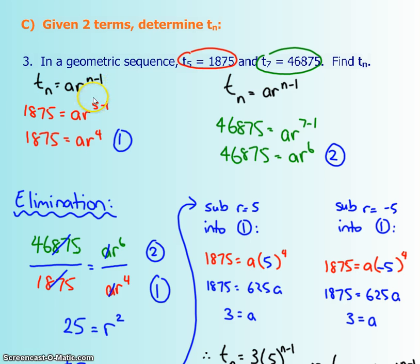Then you're going to sub in what you know. The fifth term, which means N is 5, is 1875, and that's what we put as tN. We don't know what A is and we don't know what R is, but we can simplify this exponent just a little bit and we get 4 and that's going to make our first equation. Then we do the same to this guy, our seventh term. So we put 7 right there as our N and subtract these two and get 6 and then this is our tN right there. So I have my first equation, my second equation.